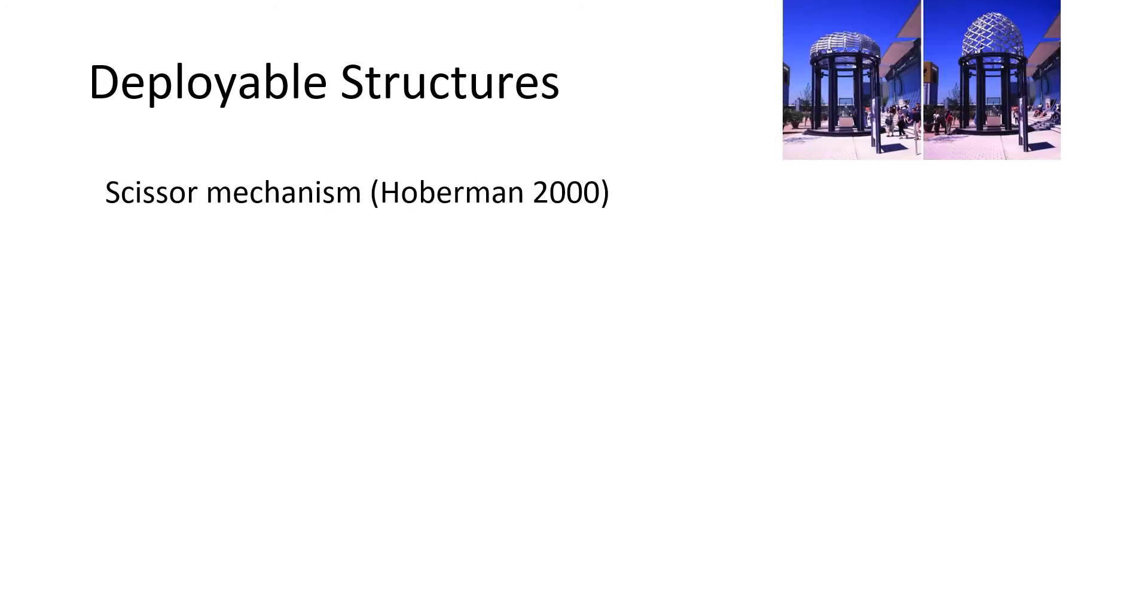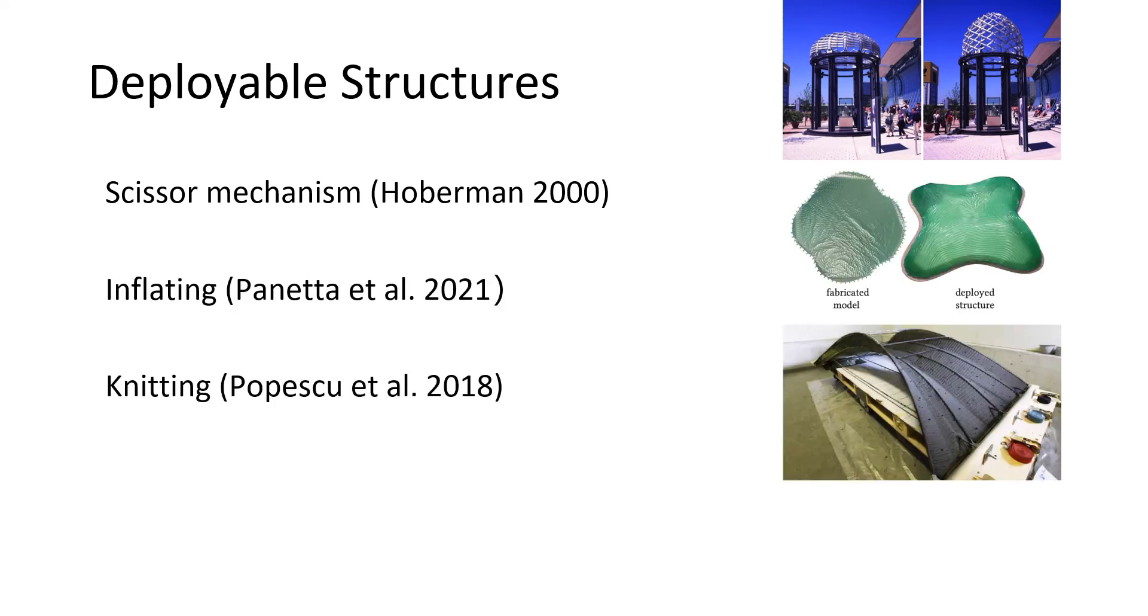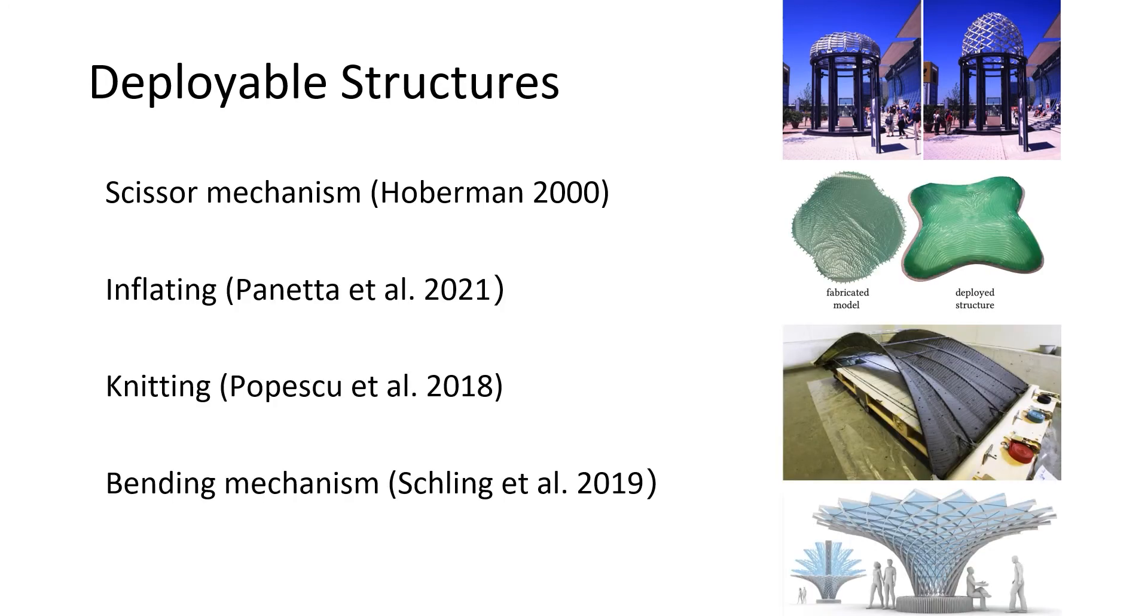Starting from the simple scissor mechanism, latest research includes inflatable systems, knit cable systems, and active bending systems. They all attempt to build a relationship between mechanical properties and differential geometric features.